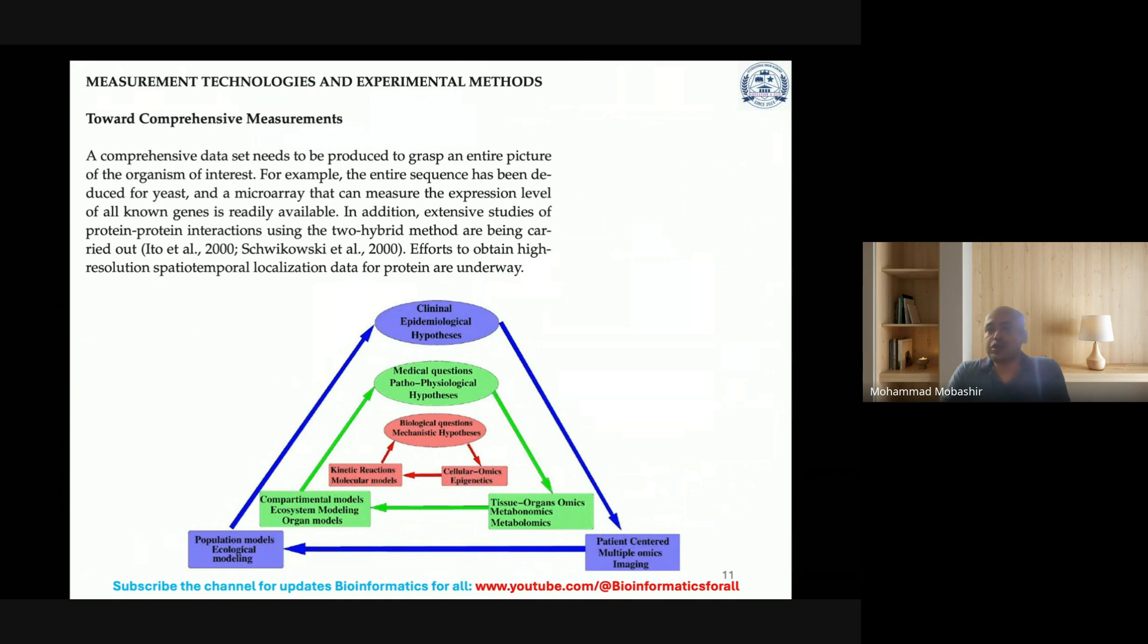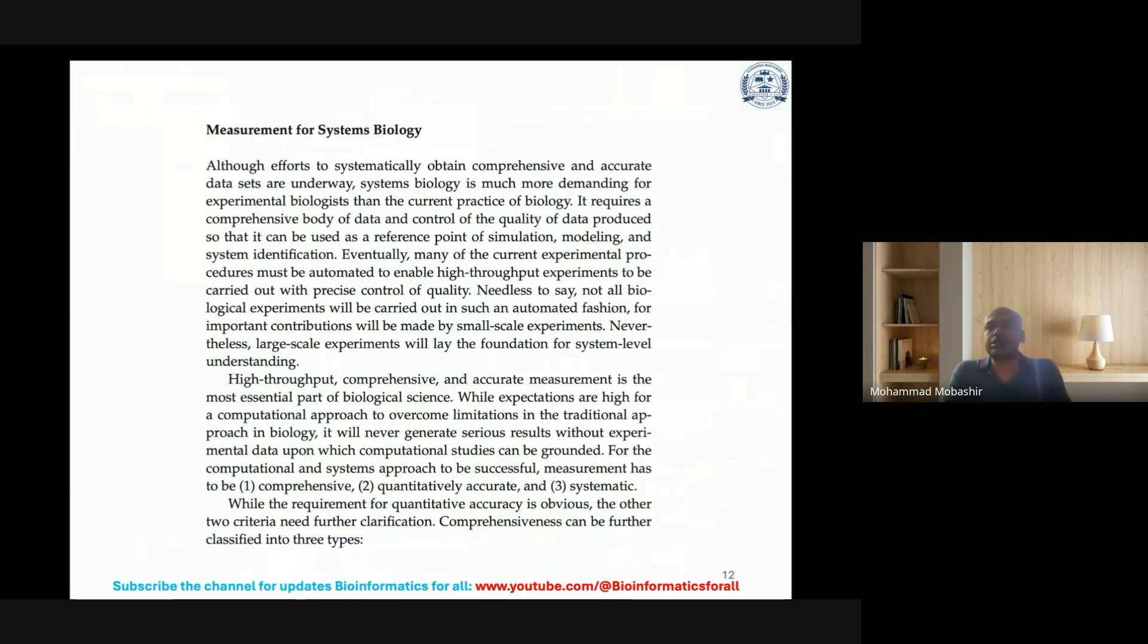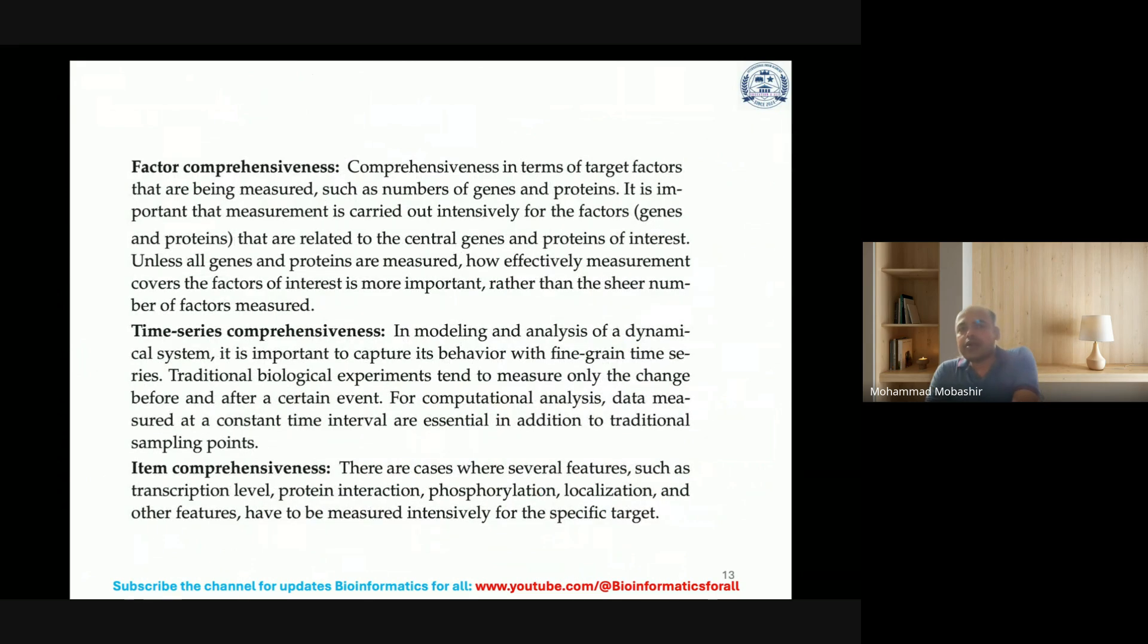For measurements in systems biology, although efforts to systematically obtain comprehensive accurate data sets are underway, systems biology is much more demanding for experimental biologists than current practice. It requires a comprehensive body of data and control of quality. Key factors include comprehensiveness in terms of targets being measured such as numbers of genes and proteins. It's important that measurement is carried out intensively for factors related to central genes and proteins of interest, or master regulated genes or proteins.